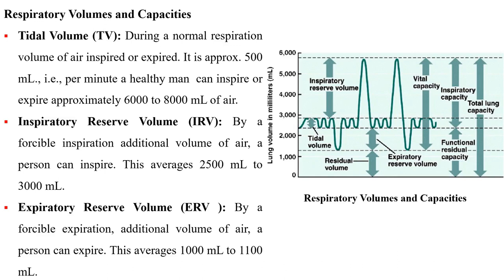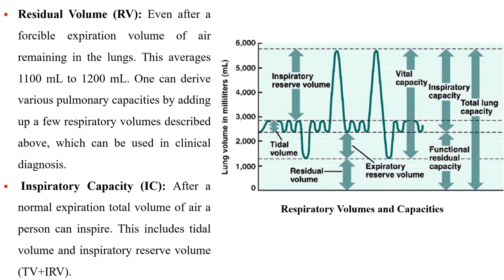Respiratory volumes and capacities: Tidal volume is the volume of air inspired or expired during normal respiration, approximately 500 ml; a healthy person can breathe approximately 6000 to 8000 ml of air per minute. Inspiratory reserve volume is the additional volume of air a person can inspire by forcible inspiration, averaging 2500 to 3000 ml. Expiratory reserve volume is the additional volume of air a person can expire by forcible expiration, averaging 1000 to 1100 ml. Residual volume is the volume of air remaining in the lungs even after forcible expiration, averaging 1100 to 1200 ml.